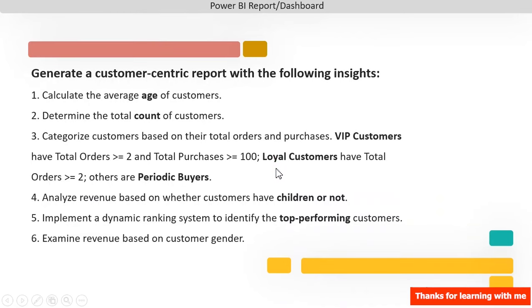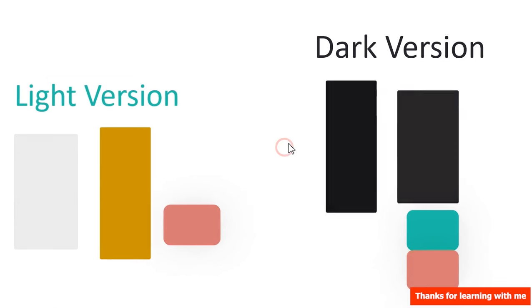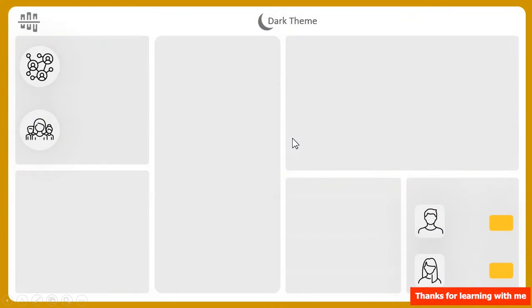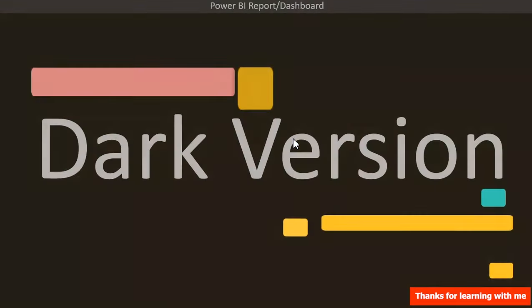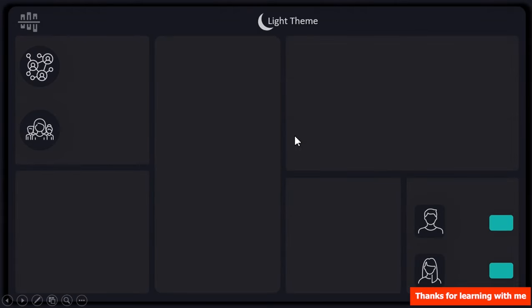Now that you've seen the task, let's look at the background we're going to use. For the light color theme we'll use this particular color, and for the dark color theme this is the color we'll use. Here in PowerPoint we've created this background for the light version, and for the dark theme we'll use something very dark — I'm going to show you how to create all of this in no time.